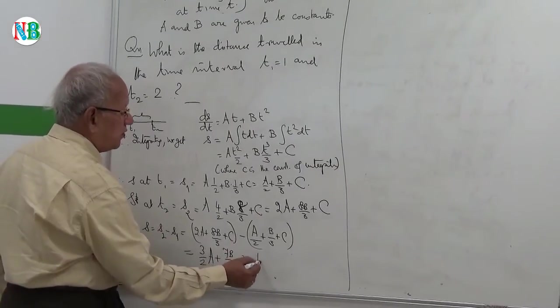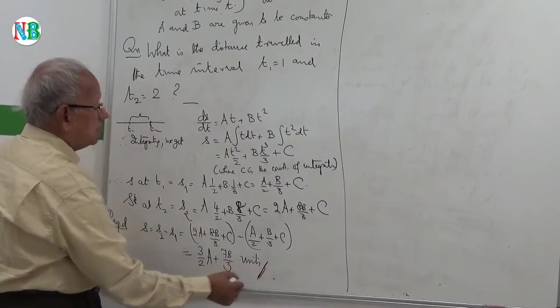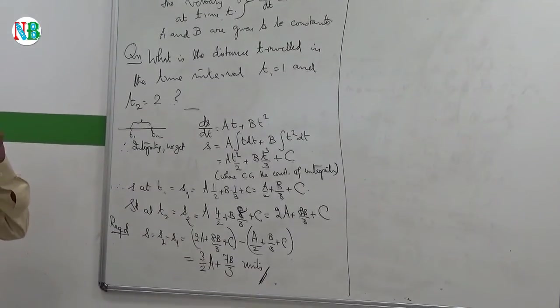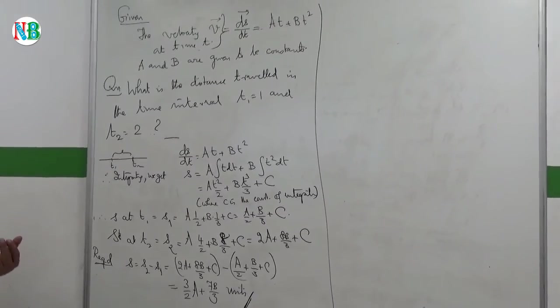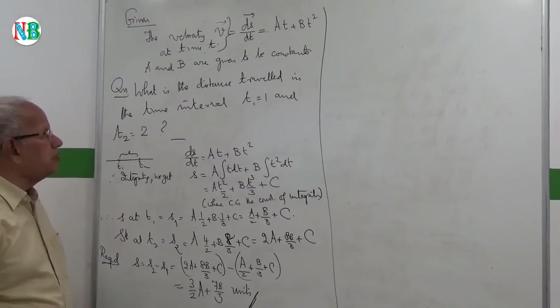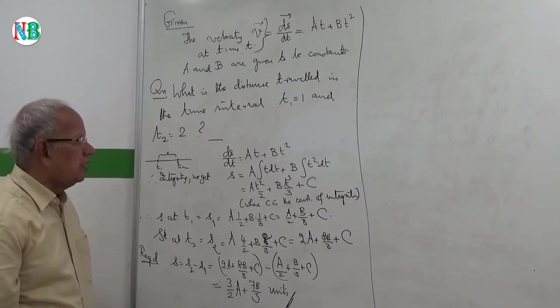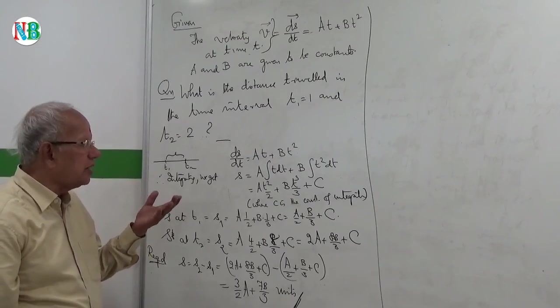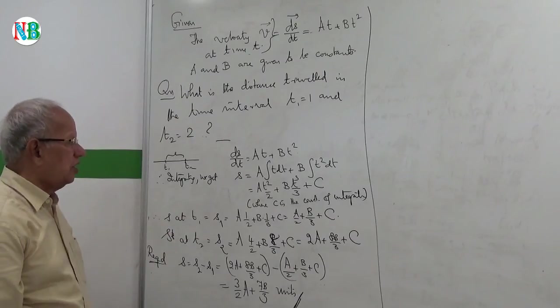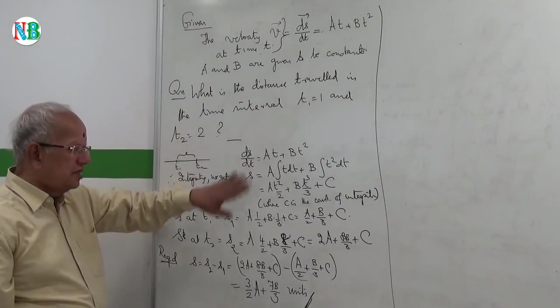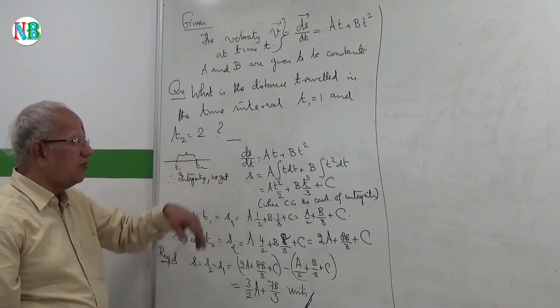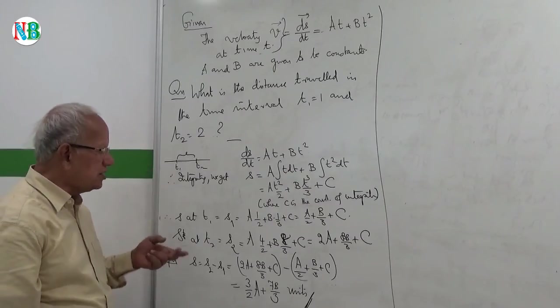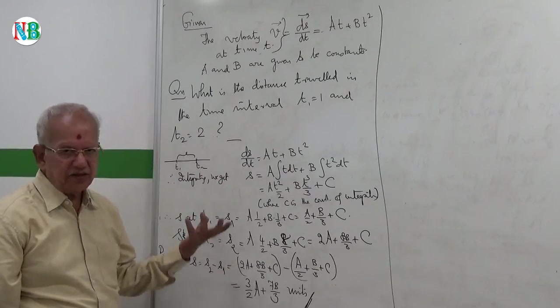So this is the distance traveled in the time interval 1 to 2. So it is simple. In fact, most of the problems on kinematics can be translated into a mathematical problem of solving a differential equation. Because velocity is a derivative, acceleration is the derivative of the velocity. And if you know the acceleration, if you integrate once, you get the velocity. If you integrate twice, once more, then you get the distance traveled in the time interval.